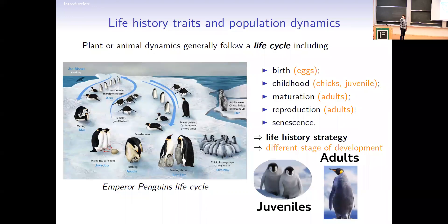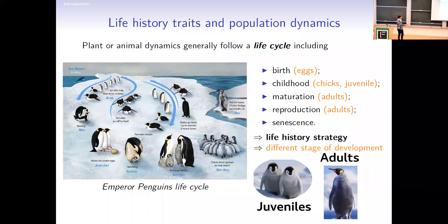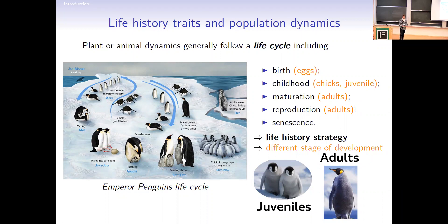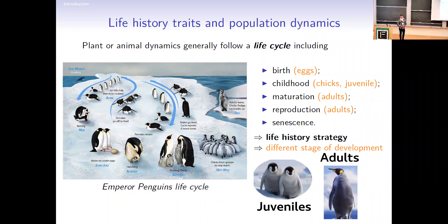A lot of plants and animals have life cycles, and during a life cycle you have different stages of development: birth, childhood, maturation, reproduction, and senescence. You have different stage classes — eggs, chicks, juveniles, and then adults. All these stages are different in duration, so maturation can take more time; you can reproduce and produce a lot of offspring or only one. You can produce offspring only once during your lifetime or many times, and that really changes your life history strategy.